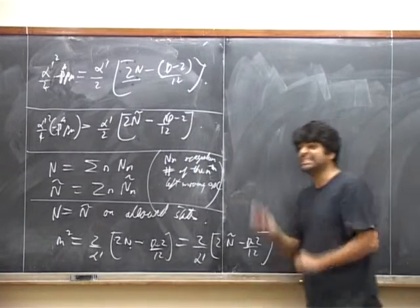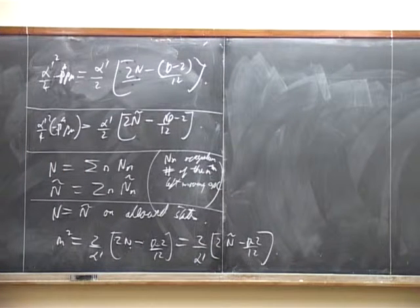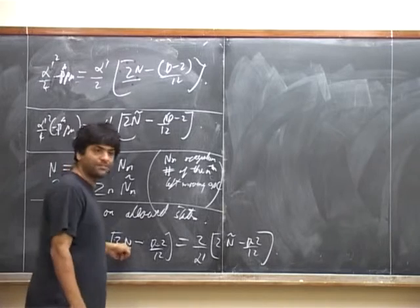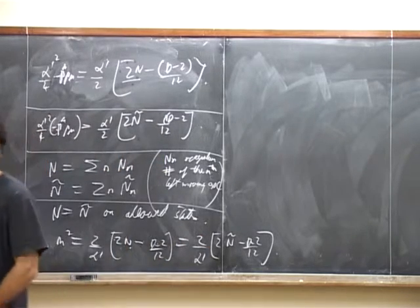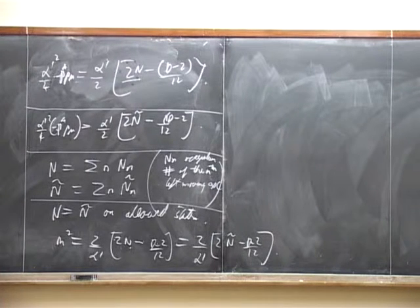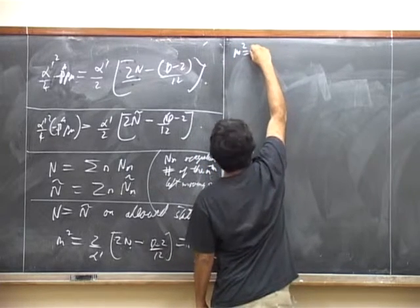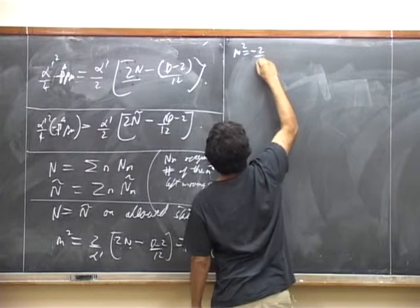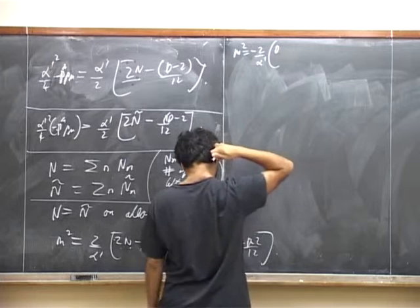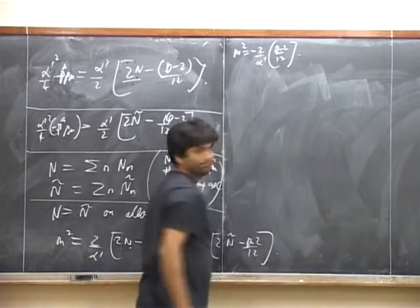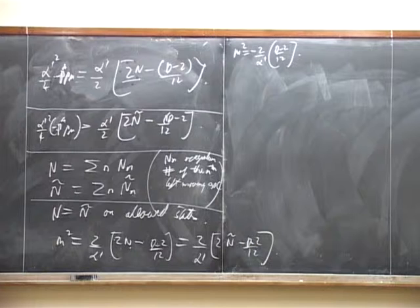Now let's turn to the question of what is the lowest mass in the system. We want the smallest value of m-squared, which occurs when N equals N-tilde equals zero — no harmonic oscillators excited. In that case, m-squared equals minus (2/alpha-prime) times (d-2)/12. The worrying thing about this formula is the minus sign.